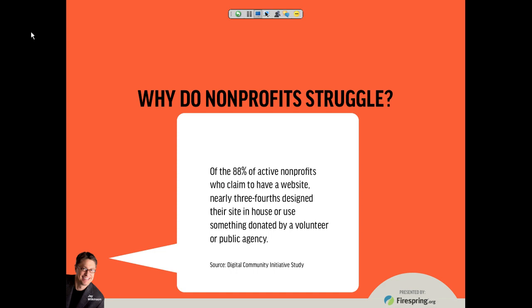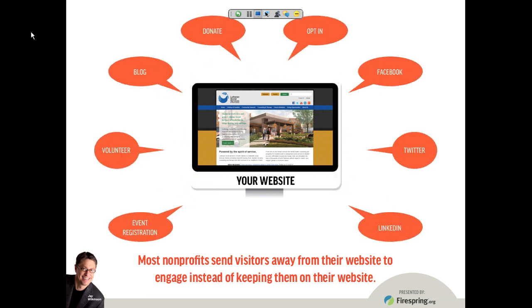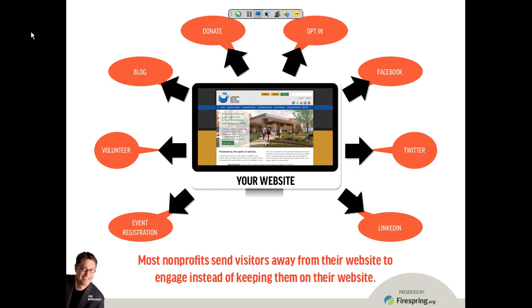We know that nonprofits struggle substantially more than our for-profit counterparts. Of the 88% of nonprofits today who have a website, nearly three-quarters of those are designed in-house or were using something that was donated by a volunteer or a public agency. This leads me to the single biggest overarching issue: so many of us are building our websites, and when people come to our website through all the different ways they find us, we end up turning around and sending them right back off. We send them over to Eventbrite to do event registration, or to Volunteer Spot, or WordPress for our blogging, or PayPal to make a payment, or some kind of social media — we're sending them somewhere else to engage with us in any meaningful way.